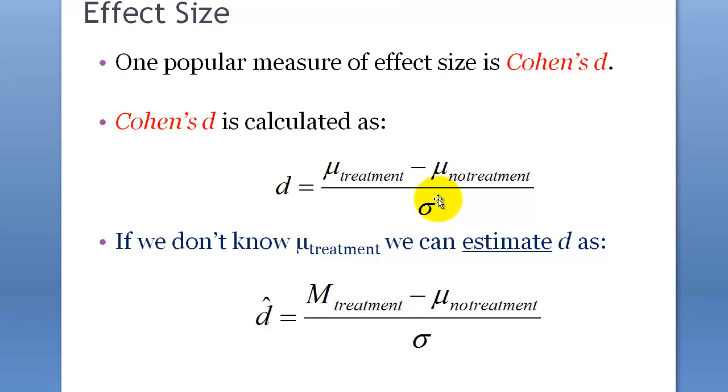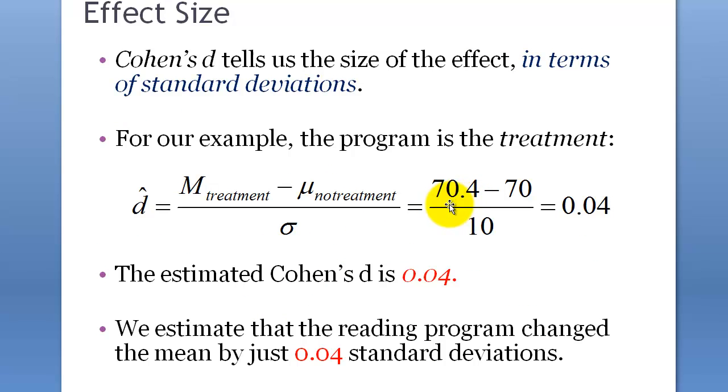If it's one, typical variance, same as typical variance, then you can say it's really large. In this example, 0.4 divided by 10 would be 0.04. So D is 0.04.